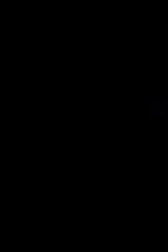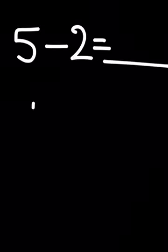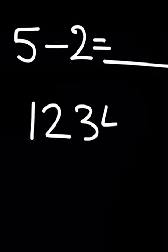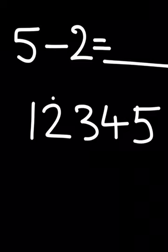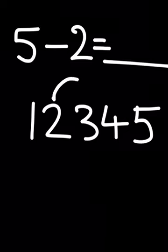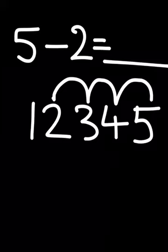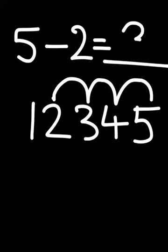We could also use a strategy of counting on. So if we had 5 - 2 = something, we could use a number line to help us and we could find the 2 on the number line. This is the number we're taking away, and we could jump all the way to 5 and we count then the number of jumps that we have done, so in this case that's 3 and that's our answer.